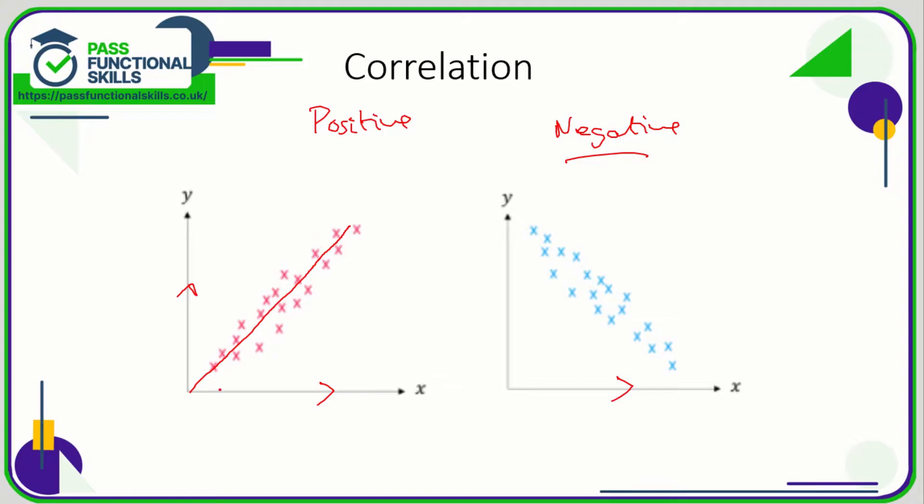So as x increases, y decreases. Positive: x increases and y increases. But for negative, x increases but y decreases. If we draw a line of best fit through as many of the dots as possible, we can see that the line goes down, so that is negative correlation. We know there's correlation because all of the dots are quite close to that line.